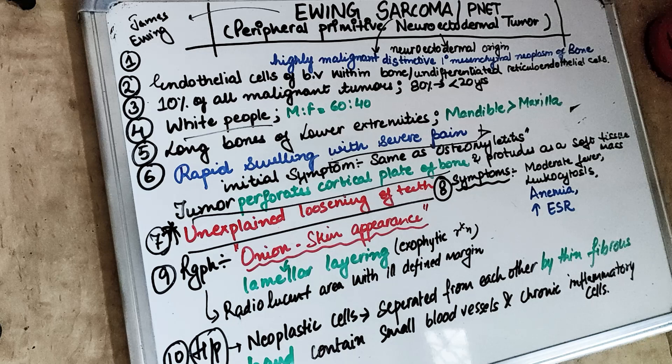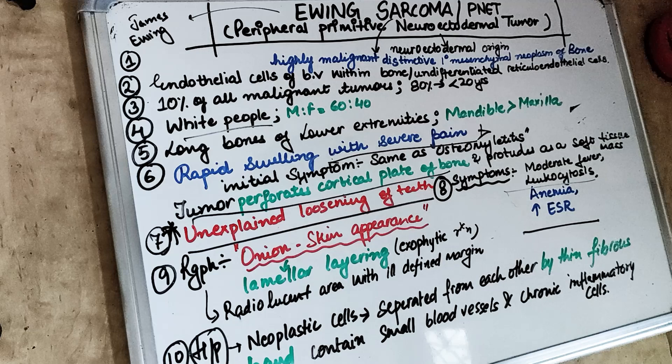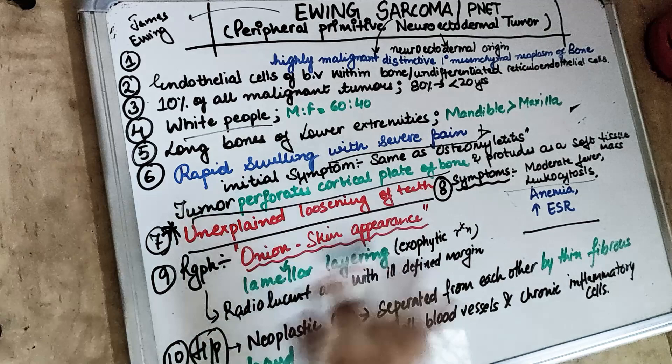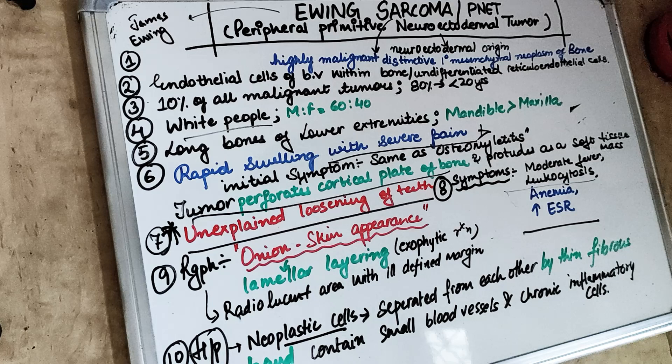Histopathologically, the neoplastic cells look like lymphocytes, and there is leukocytosis with an increased ESR. The sheets of neoplastic cells are separated from one another by a very thin fibrous connective tissue band, which contains small blood vessels and some chronic inflammatory cells.